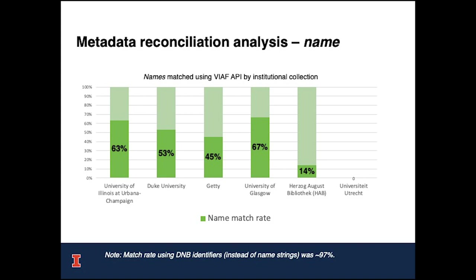Here are the results broken down by institution. As you can see, the majority of the match rates here is around 50% using the VIAF auto-suggest API for name authorities, with a highest rate of 67%. We had no data for Utrecht because the Utrecht sample only created one name term not previously reconciled, which is too small to be statistically meaningful.